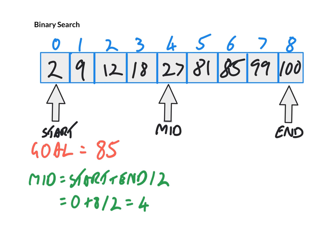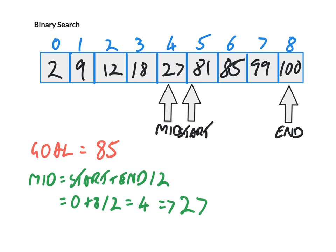Now that we have our mid position, we know our mid value is 27. All we have to do is compare our middle value with our goal value. Our goal value, 85, is higher than our middle position, so we're going to move our start position up. At this point, we will need to recalculate where our midpoint is.